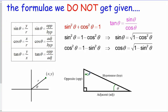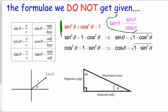Just remember that the hypotenuse is always opposite the right angle. Once you've got your angle, the adjacent is the side next to it - it can't be the hypotenuse because that one's already taken, and then this one's the opposite. If this was our angle over here, this would become the adjacent and this would become the opposite.